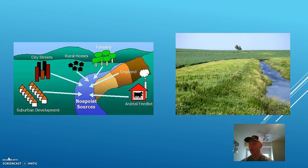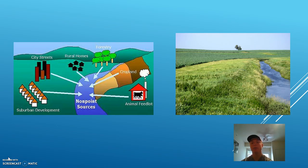Buffer strips eliminate 90% of the sediment and 75% of chemicals created by agriculture, according to the Agricultural Best Management Practice Handbook for Minnesota. This works extremely well, and the picture on the right is an example of a vegetative buffer strip. As you can see, it separates the agricultural field from the waterway, and this perennial grass works very well as a filter. This law is a great first step towards improving Minnesota's declining water quality.